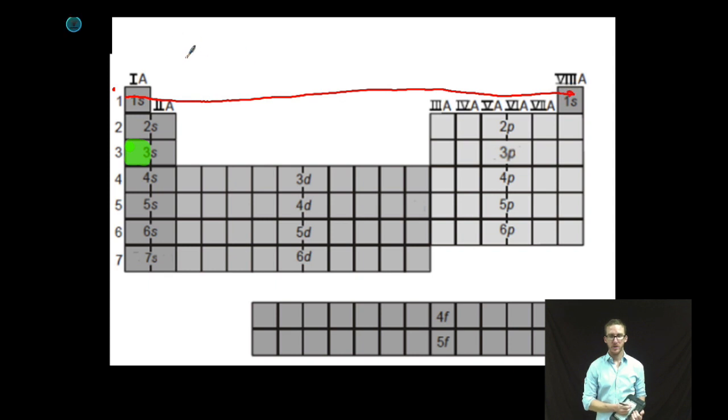So the first orbital that I'm going to put some electrons in is the 1s orbital and I can fit two electrons in that orbital. But remember, sodium has 11 electrons and they're not all going to fit in that 1s orbital.